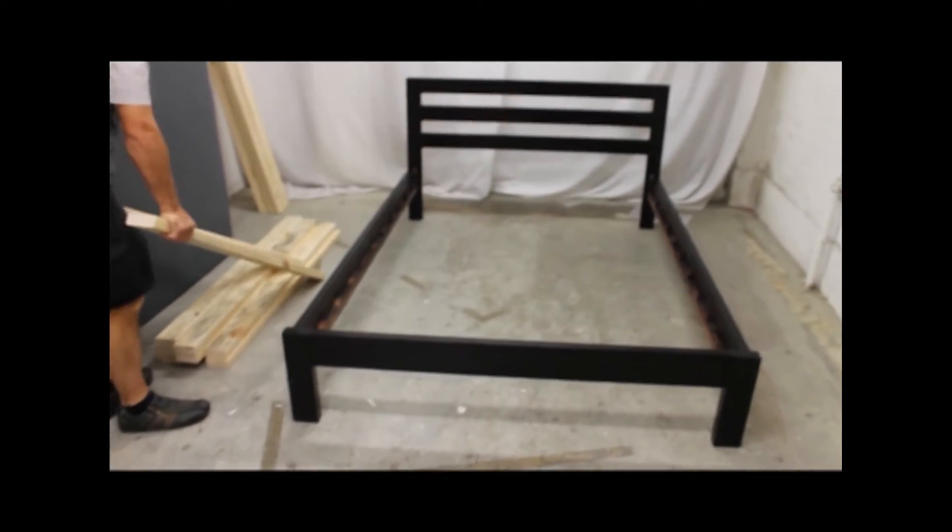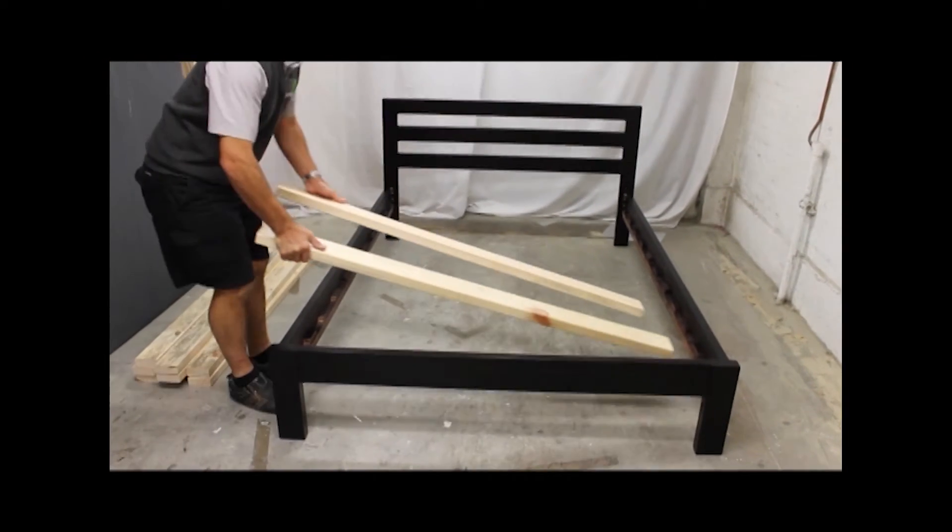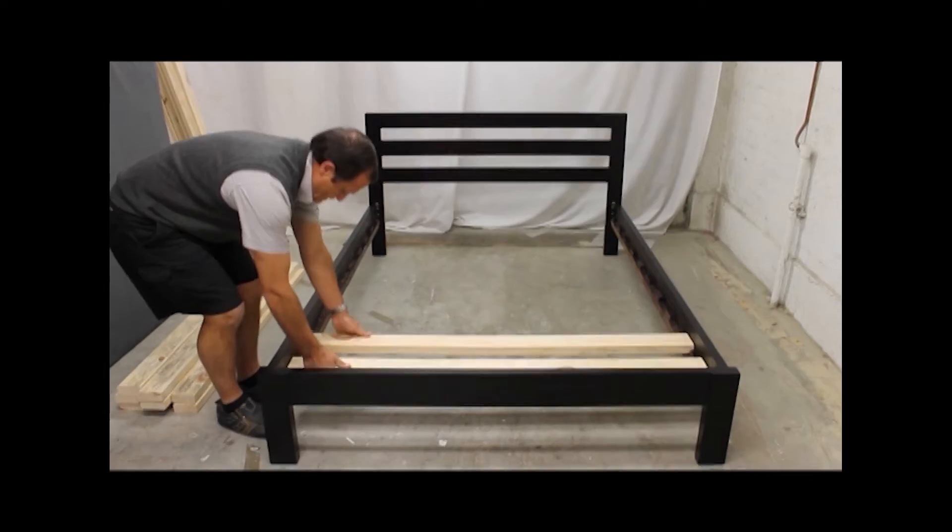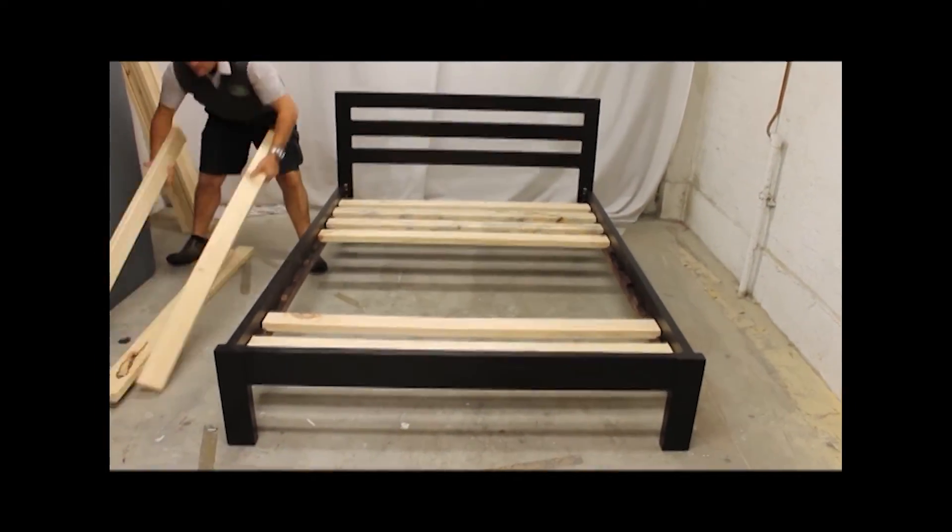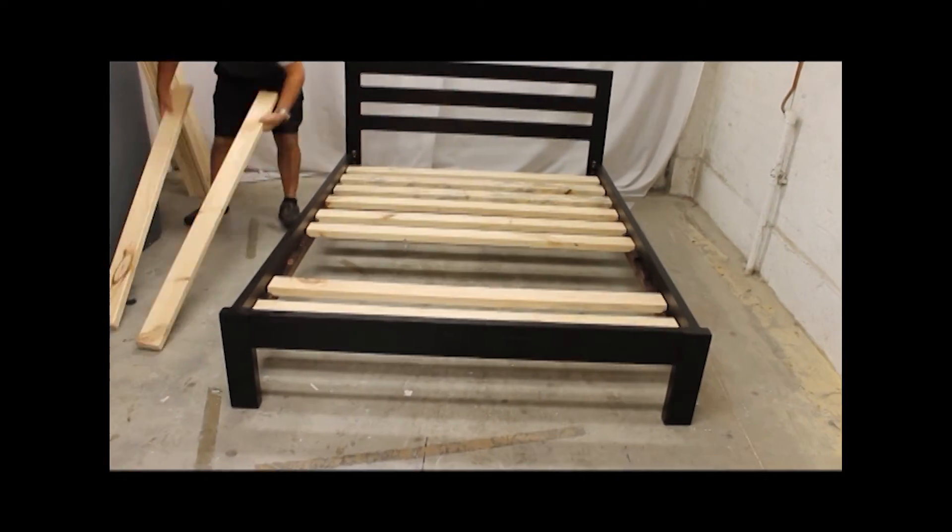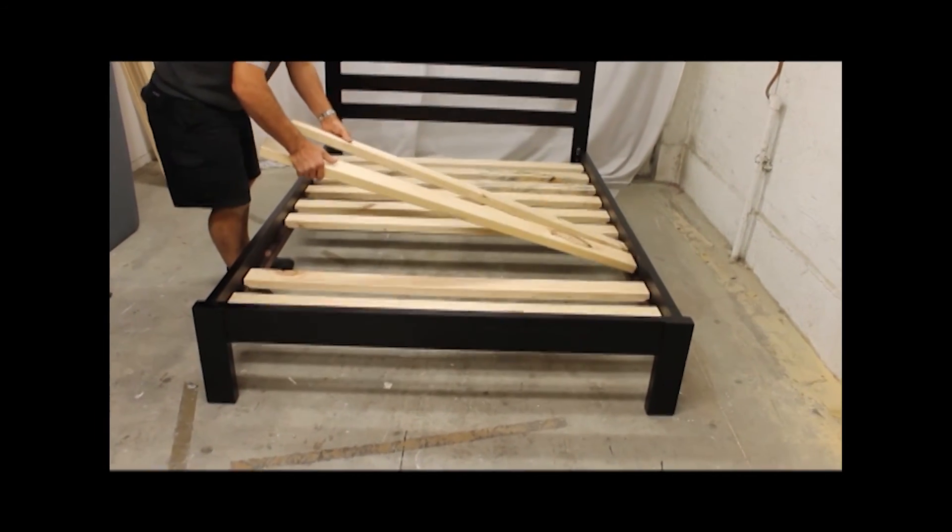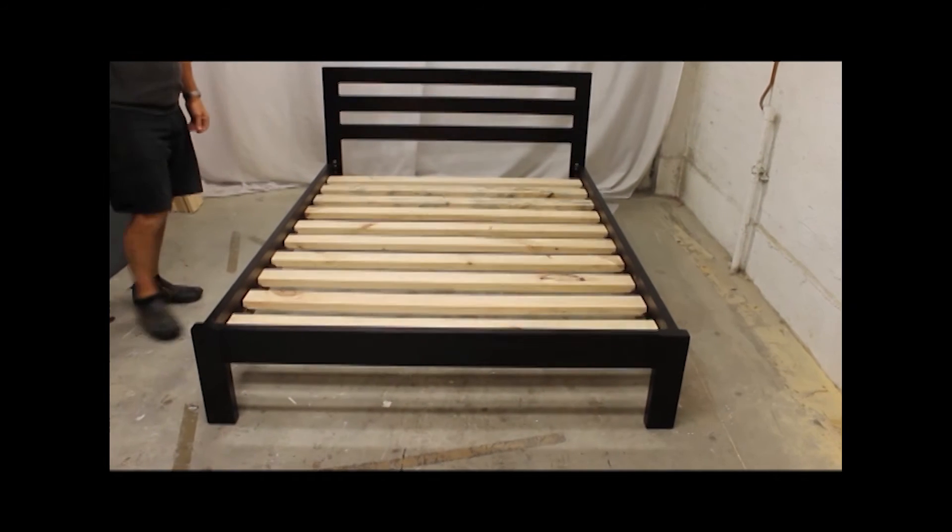Lastly, you need to place your slats onto the slots to complete the assembly. If you do have a double queen, king, or super king bed, refer to the assembly guide for a center rail, and this will help complete the final step to your new bed.